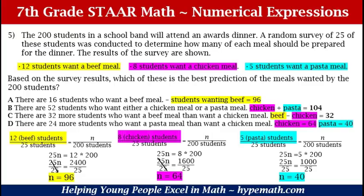Let's not look at the answer choices yet. We set up our prediction formula to find how many students out of 200 would want each meal. For beef, we set up the ratio: 12 over 25 equals n over 200. Cross multiplying gives us 25n = 12 × 200. We divide both sides by 25 to isolate the variable, and 2400 divided by 25 equals 96. So 96 students out of 200 would want a beef meal.